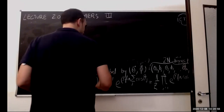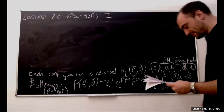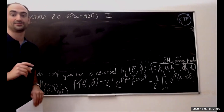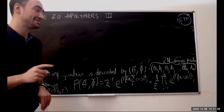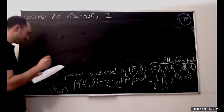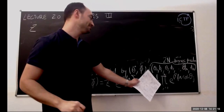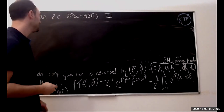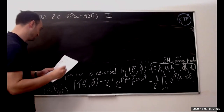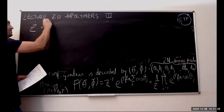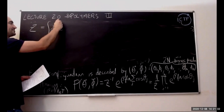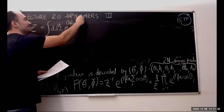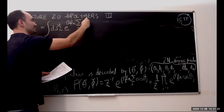This is the freely jointed chain — there is no bending energy in this model. All angles are free and independent, which brings a big simplification. Now, the partition function is the probability summed over all configurations, which means integrating over all solid angles: the integral over d omega of e to the beta f a cosine theta, taken to the power n.